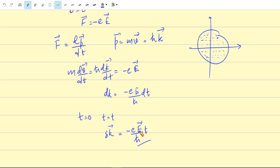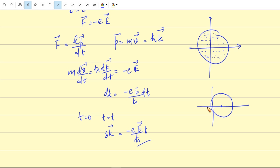When we apply an electric field, after a time t the Fermi sphere is shifted — the center of the Fermi sphere no longer coincides with the origin of k-space. That means there is a change in k for each electron, so the entire Fermi sphere is shifted, and the net momentum is not zero. Because of the electric field, this Fermi sphere shifts, and these electrons will have collisions with phonons, impurities, and other imperfections in the crystal. Therefore their wave vector decreases.